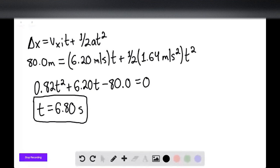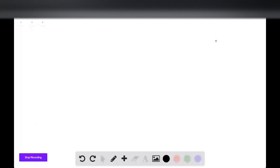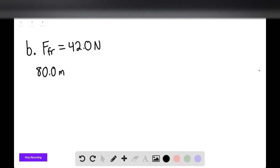Now, for part B, we're going to essentially use the exact same, we're going to do the exact same calculations. However, here the force of friction equals 42.0 newtons. Now, essentially, we can then solve for t once again, and we can say that 80.0 meters will equal 6.20 meters per second times t plus one-half, and then you can substitute in for acceleration.